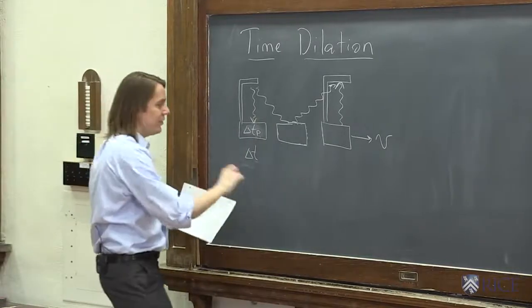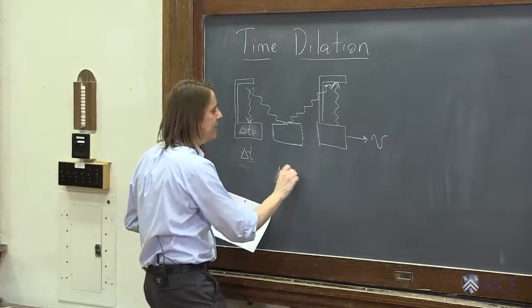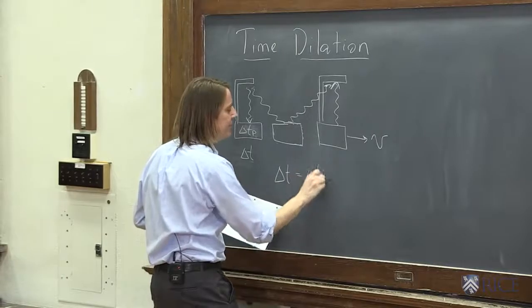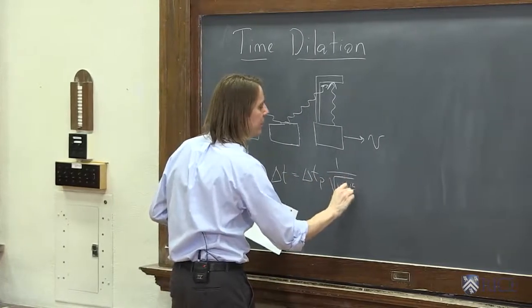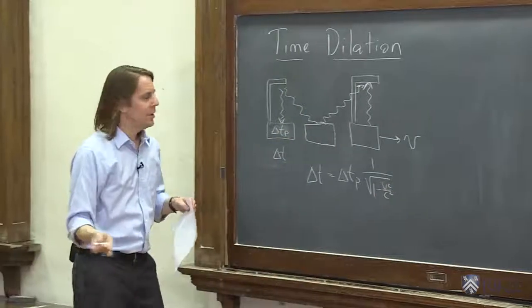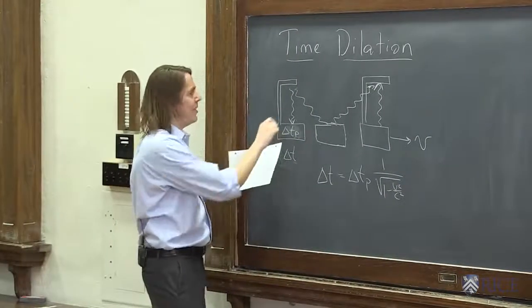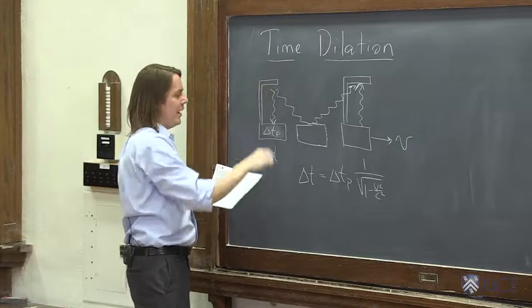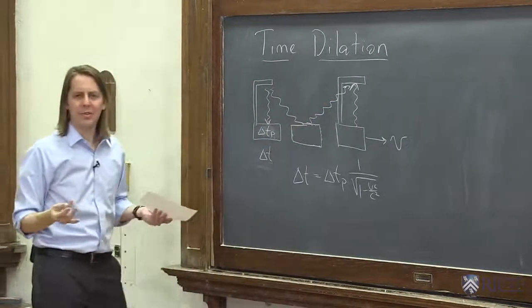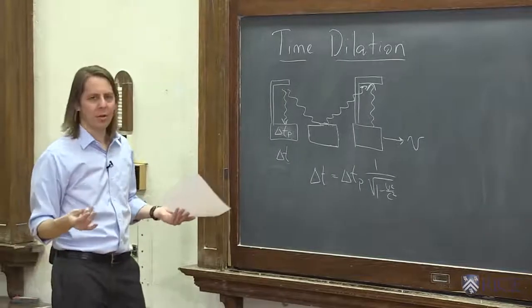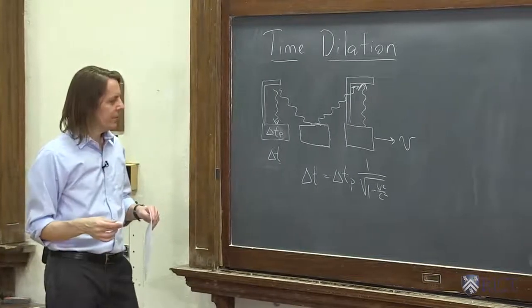And the reason they're not the same, what we found was that delta T is the same as delta Tp, except this factor 1 minus v squared over c squared. The reason they're not the same is the one in the proper frame sees it go one distance, and the one in the lab frame sees it go a different distance, but they see it go the same speed. So the only way it can work out is that the time is different.